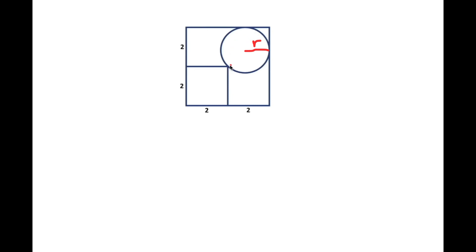First, let me draw a line through this square. I'm going to label this side length of the square B, this side A, and this side C. We're going to be using the Pythagorean theorem to solve for C.